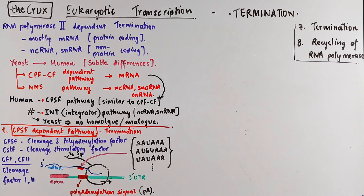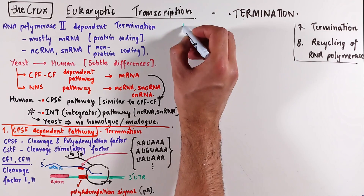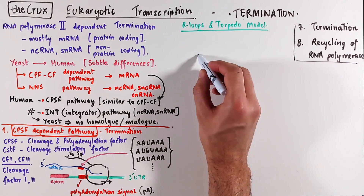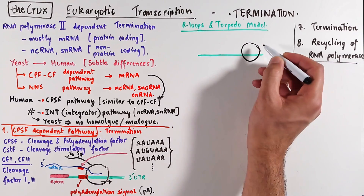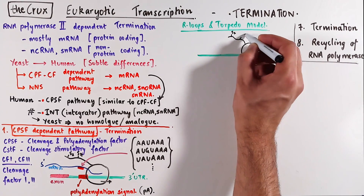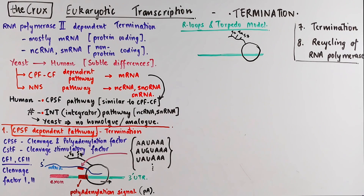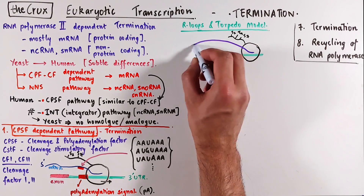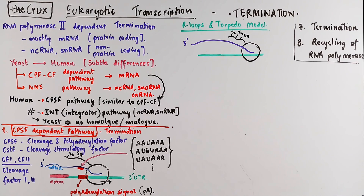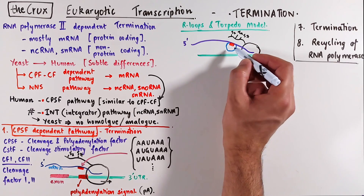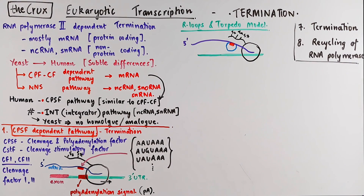The overall steps that follow after the poly-A signal is transcribed are described through a mechanism involving the formation of R-loops and a torpedo model. Also notable is that during termination, the threonine at position 4 in the C-terminal domain also gets phosphorylated — so now we have serine 2, serine 7, and threonine 4 phosphorylated. The exact timing is unclear, but it occurs when the RNA polymerase has transcribed the poly-A signal or at least some part of the 3' UTR.